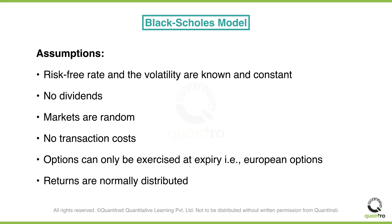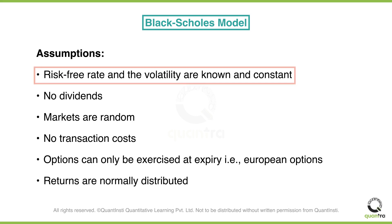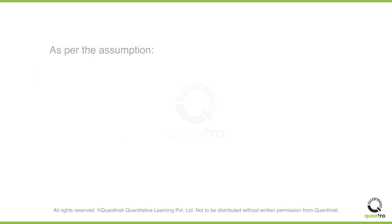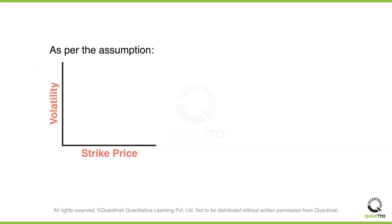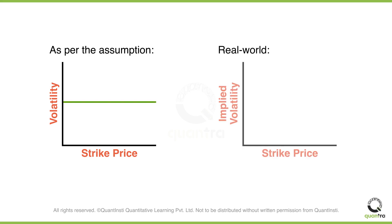Most of these assumptions will not hold true in the real world. For example, one of the assumptions is that volatility will remain constant until the maturity of the options contract. So according to this assumption, the volatility curve would be a flat line. But in the real world, that's not the case, and the volatility curve is instead in the shape of a smile.